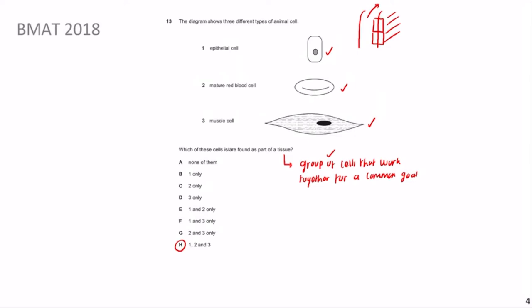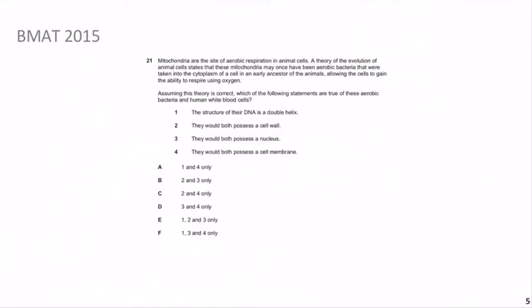Welcome back. In the previous video we covered BMAT 2018. Now let's move to BMAT 2015 Question 21. The question states that mitochondria are the site of aerobic respiration in animal cells. A theory of the evolution of animal cells - the endosymbiotic theory - states that mitochondria may once have been aerobic bacteria taken into an early ancestor of animal cells, allowing them to gain the ability to respire using oxygen.